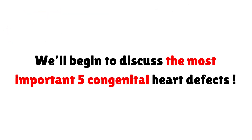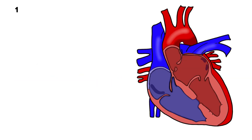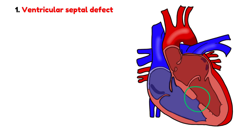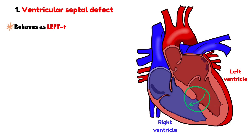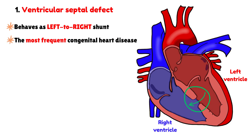In the following part, we'll begin to discuss the most important congenital heart defects, starting with the non-cyanotic ones. We will start with the ventricular septal defect, or VSD. This defect represents an opening in the septum that separates the left and right ventricles, allowing blood to flow from the left ventricle to the right one, thereby behaving as a left-to-right shunt. This condition is, in fact, the most common of all congenital heart diseases, accounting for approximately 25-30% of the total cases.